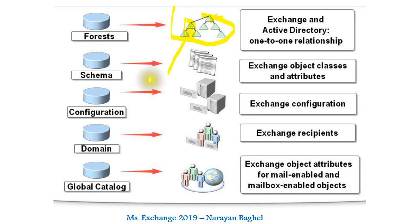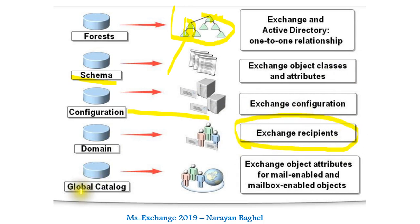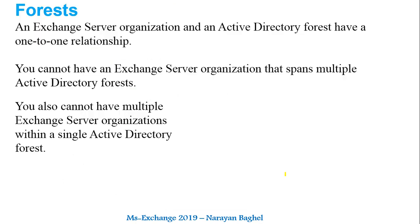The schema keeps exchanging object classes and attributes. Configuration keeps exchange of configuration information. The domain partition handles recipients. The global catalog exchanges object attributes for mail-enabled and mailbox-enabled objects — these are the two key things in the global catalog.